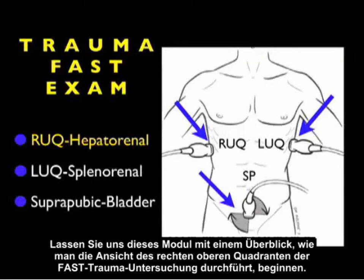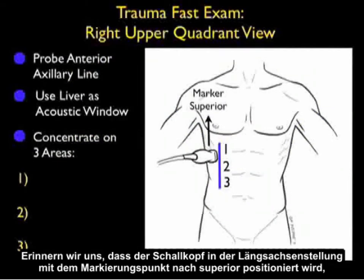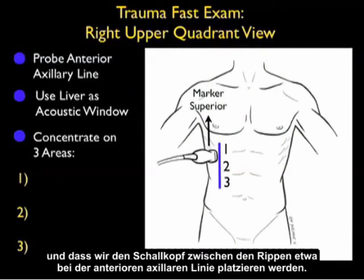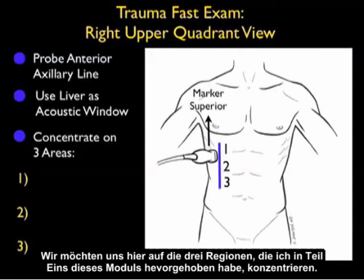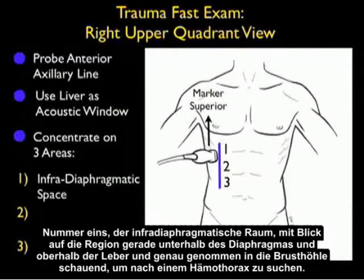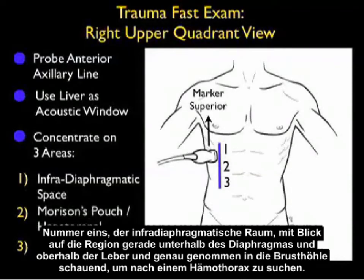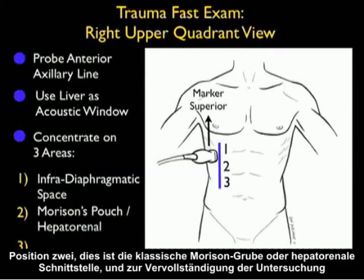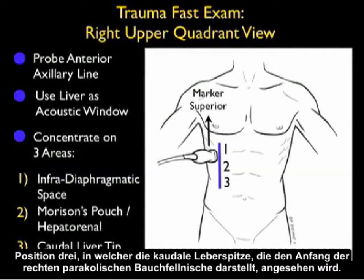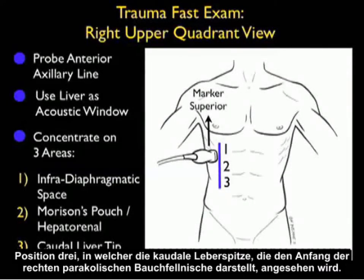Let's begin this module by reviewing how to perform the Right Upper Quadrant View of the Trauma Fast Exam. The probe is positioned in the long axis configuration with the marker dots superiorly, placed in between the ribs at about the anterior axillary line. We want to focus on three areas: Number 1, the infradiaphragmatic space, looking just below the diaphragm and above the liver and into the chest cavity for a hemothorax; Position 2, the traditional Morrison's pouch or hepatorenal interface; and Position 3, the caudal liver tip representing the beginning of the right pericolic gutter.